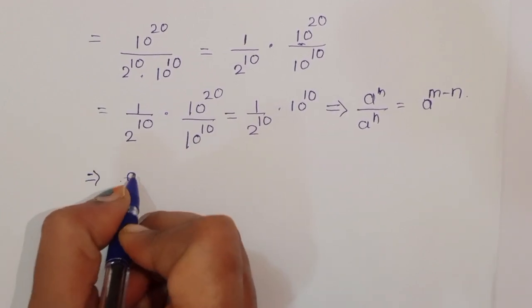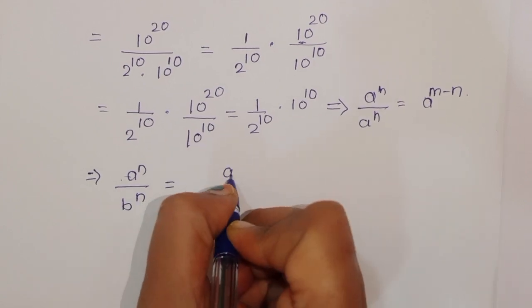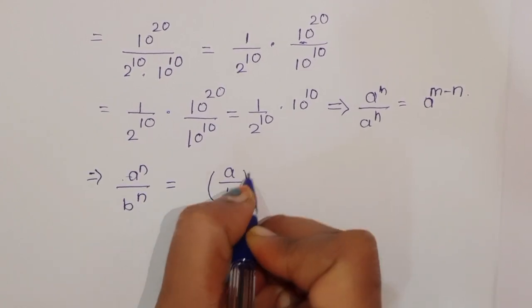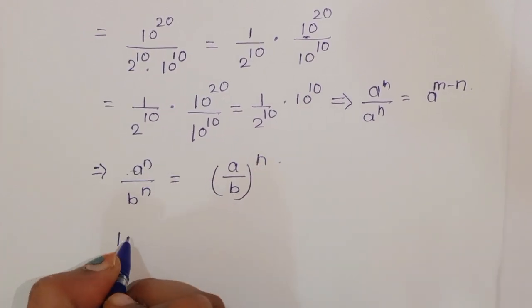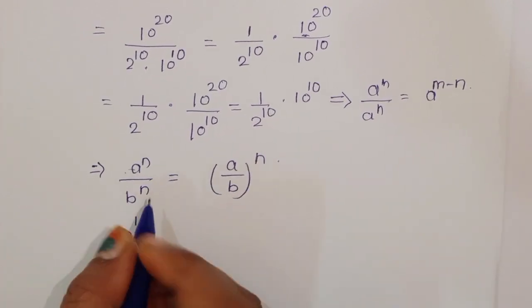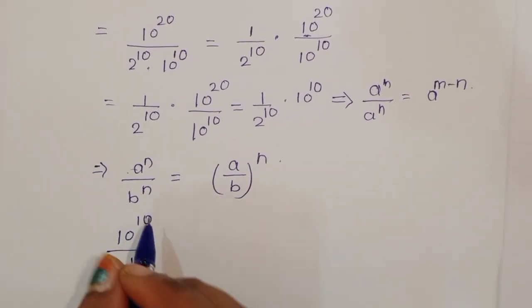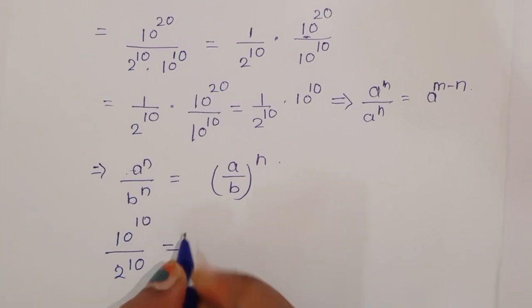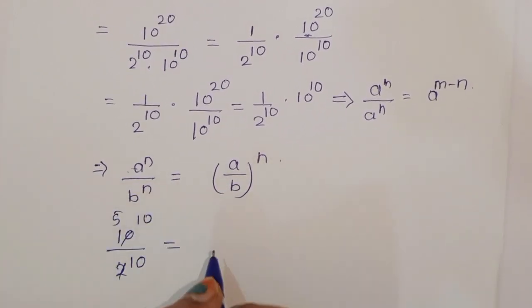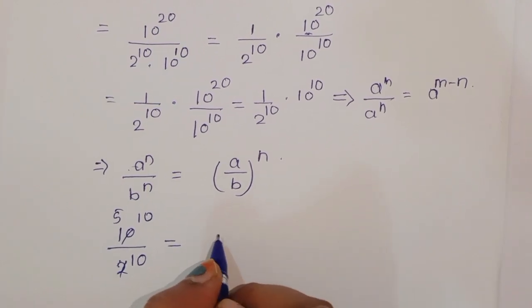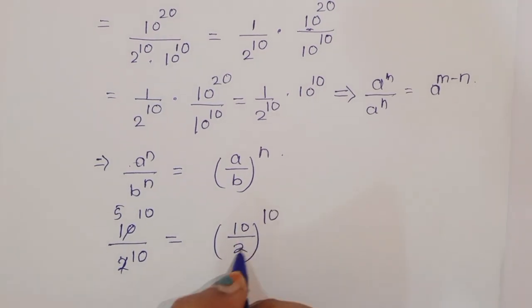Now we apply the formula: a raised to n divided by b raised to n is equal to (a divided by b) raised to n. So 10 raised to 10 divided by 2 raised to 10 can be written as (10 divided by 2) raised to 10.